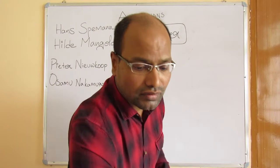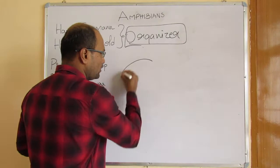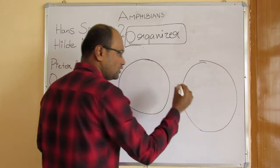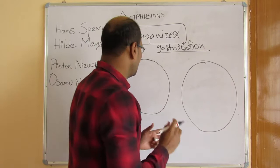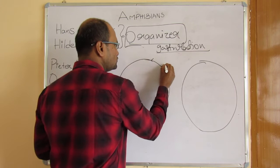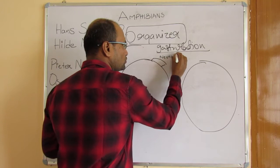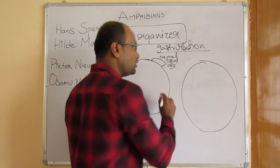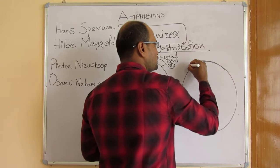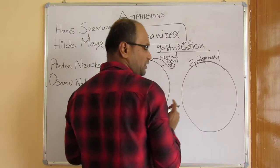They also performed experiments at the gastrulation stage and identified that early gastrulation is important for these organizers. They took two embryos at the gastrulation stage and in the first case took ectodermal neural tissue or neural cells from one developing embryo.